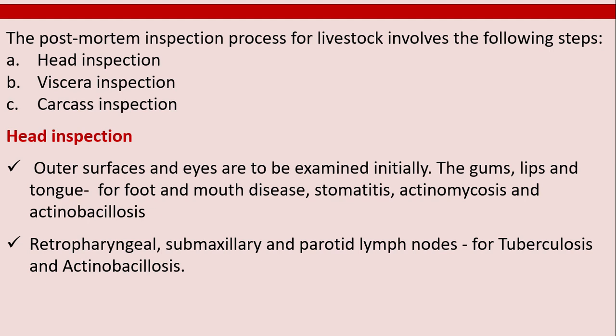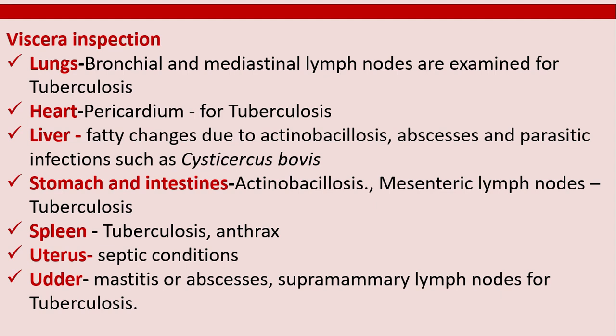Retropharyngeal, submaxillary, and parotid lymph nodes are examined for tuberculosis and actinobacillosis. In viscera inspection, lungs — including bronchial and mediastinal lymph nodes — are examined for tuberculosis. The heart and pericardium are checked for tuberculosis, the liver for fatty changes, actinobacillosis, abscesses, and parasitic infections such as Cysticercus bovis. Stomach, intestines, and mesenteric lymph nodes are checked for actinobacillosis and tuberculosis. The spleen is examined for tuberculosis and anthrax, the uterus for septic conditions, and the udder for mastitis or abscesses.